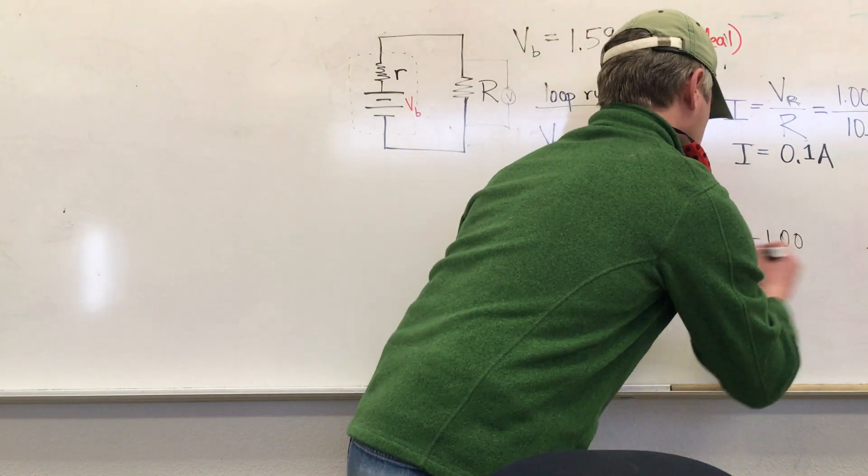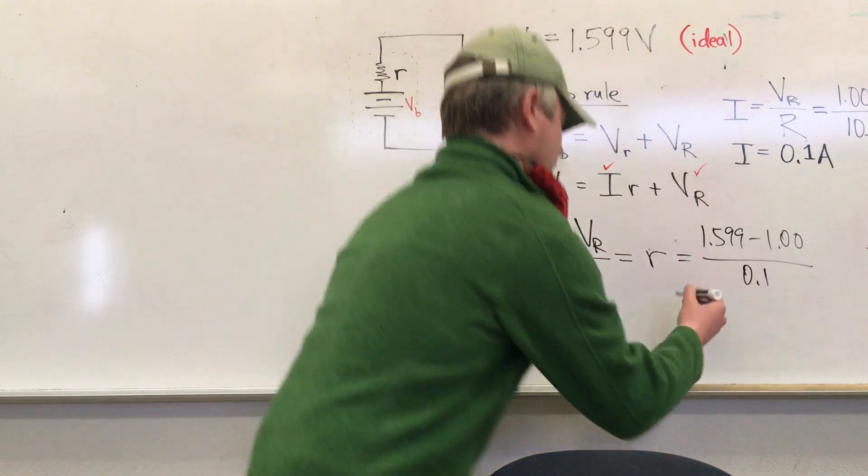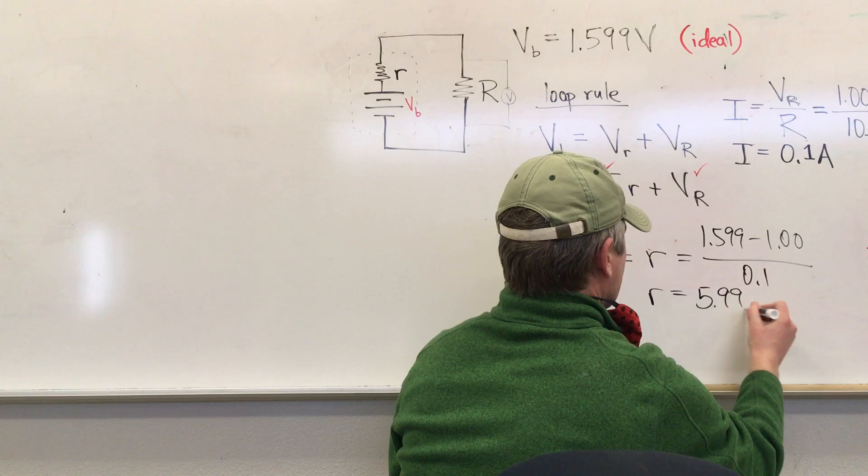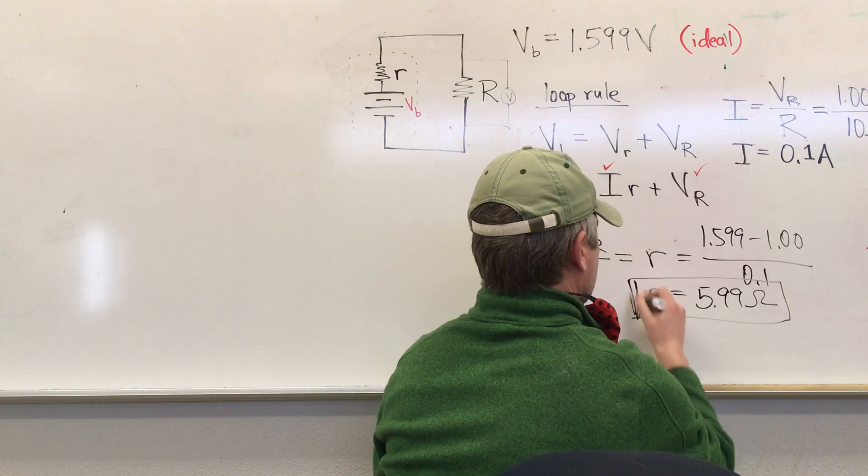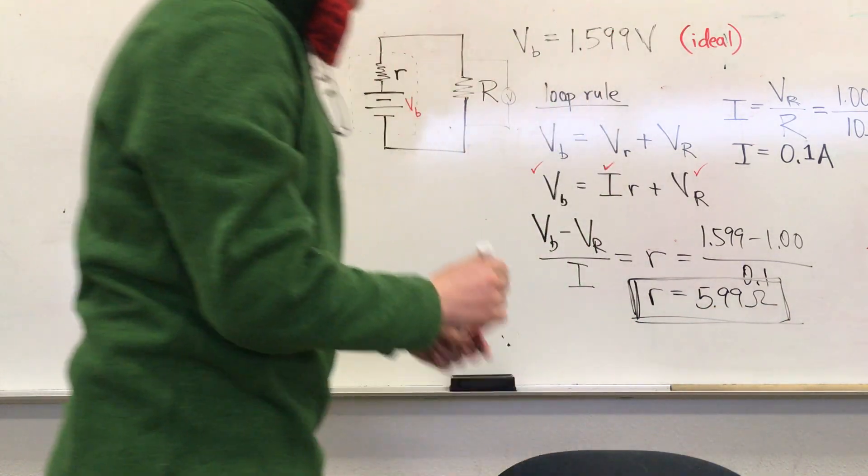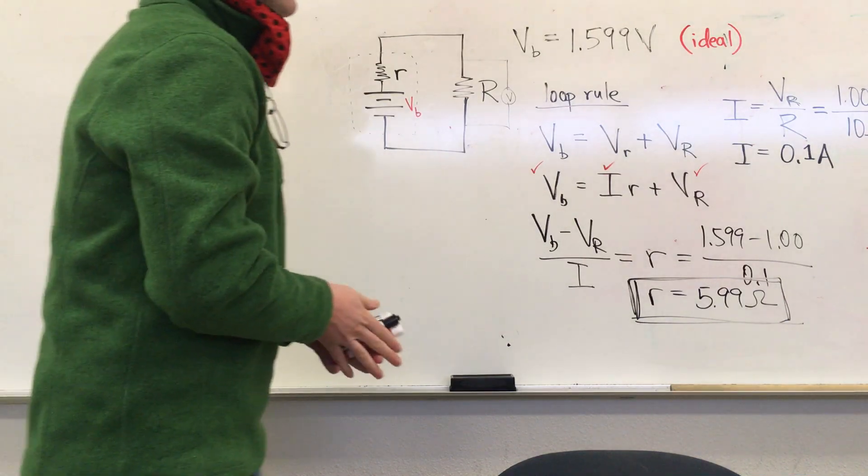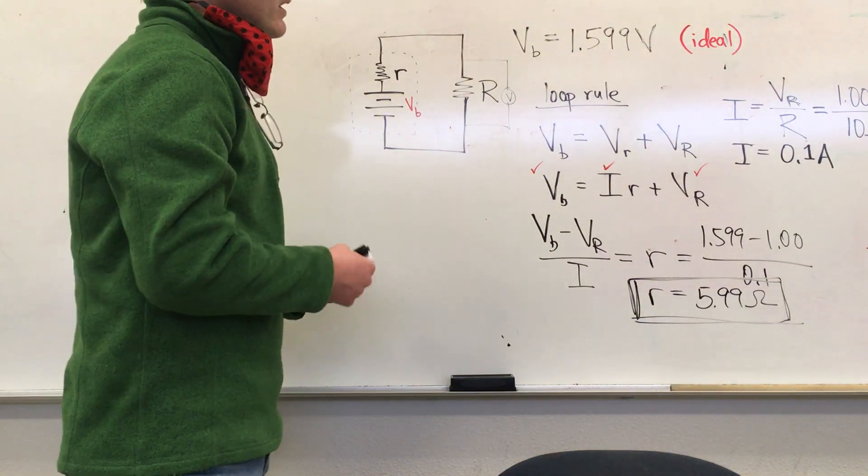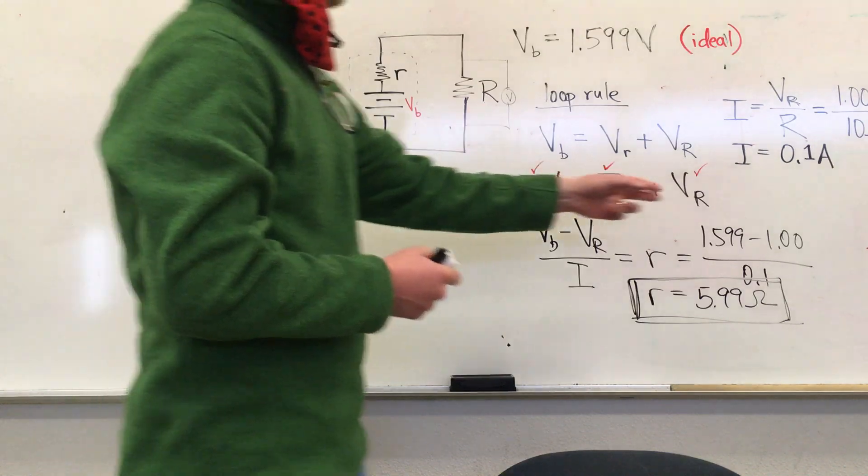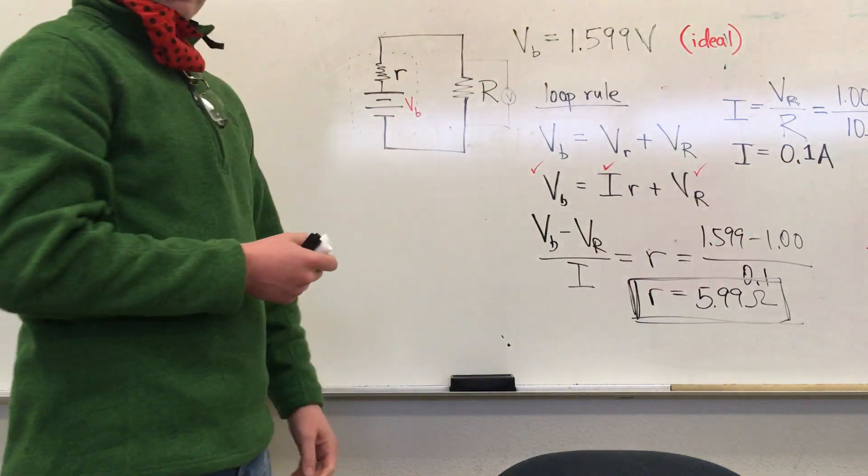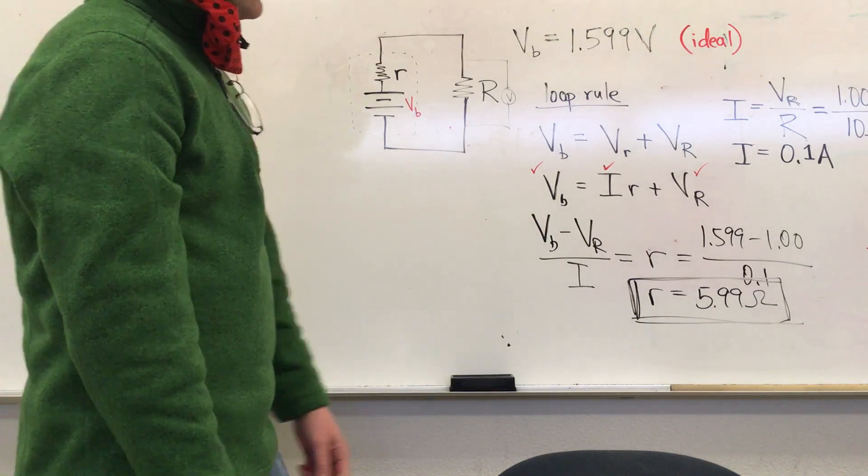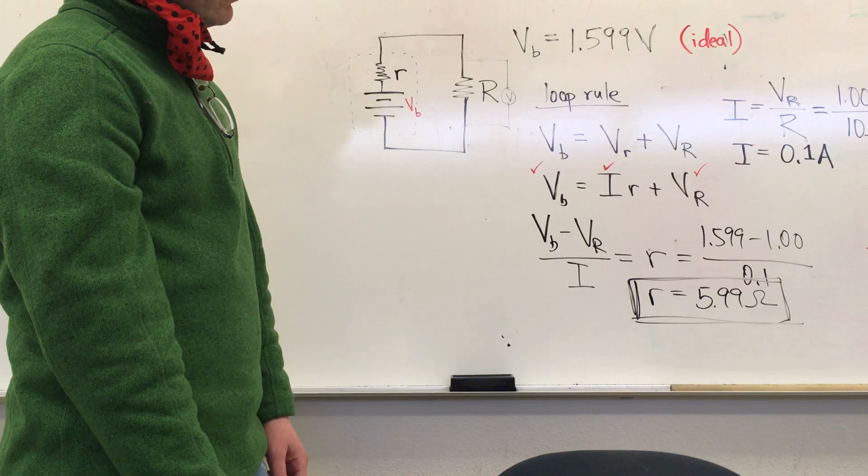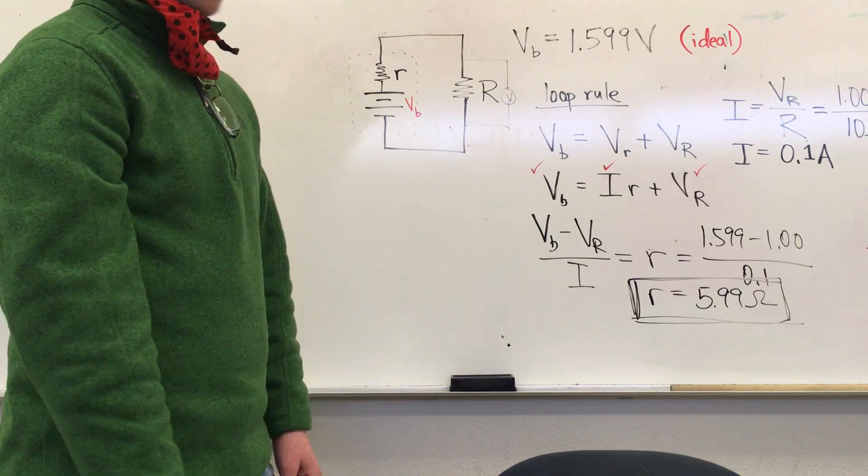When we put in all the numbers for this, you put in your 1.599, you put in your 1.0, and you divide it by 0.1. You will get that the internal resistance is just under 6 ohms. Now there's some imprecision in the measurements here. That seems really high, but it's only high because we're operating this battery in a mode where it's normally not being operated. With the 10 ohm external resistance here quite low, we're pushing a lot of current, we're probably getting some heating, and we're operating the battery sort of close to its tolerance.